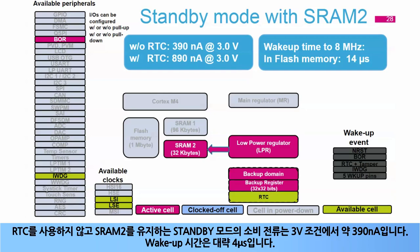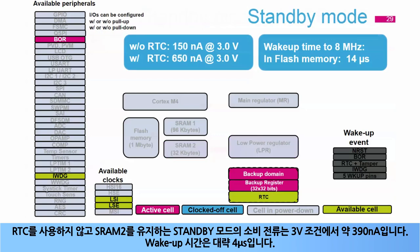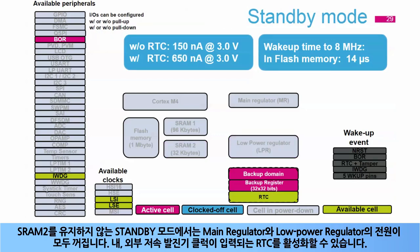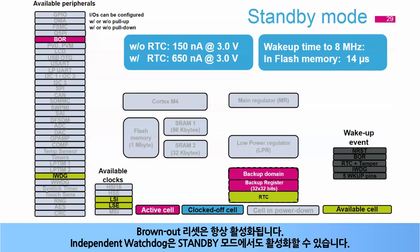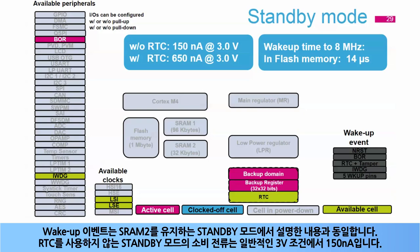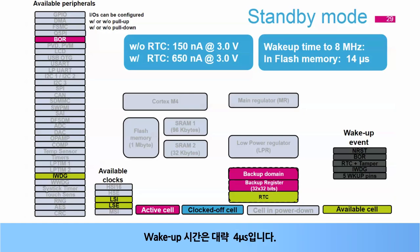The standby with SRAM 2 consumption without the RTC is around 390 nanoamps typical at 3 volts. The wake-up time is approximately 4 microseconds. In standby mode without SRAM 2, the main regulator and the low-power regulator are powered down. The RTC, clocked by the internal or external low-speed oscillator, can be activated. The brownout reset is always enabled, and the independent watchdog can also be enabled. The wake-up events are the same as those in standby mode with SRAM 2. The standby consumption without RTC is 150 nanoamps typical at 3 volts; wake-up time is approximately 14 microseconds.